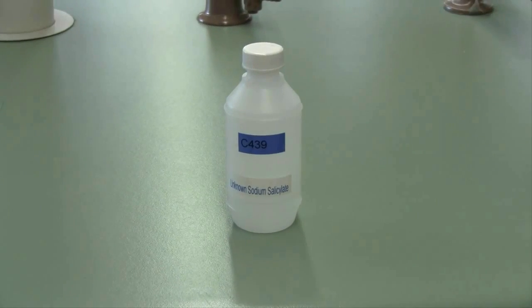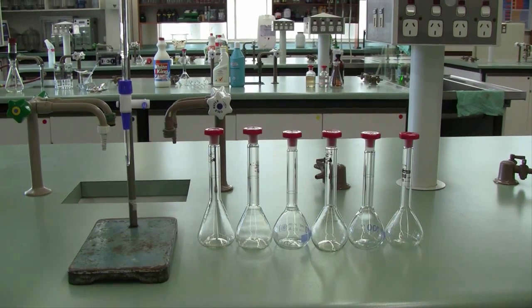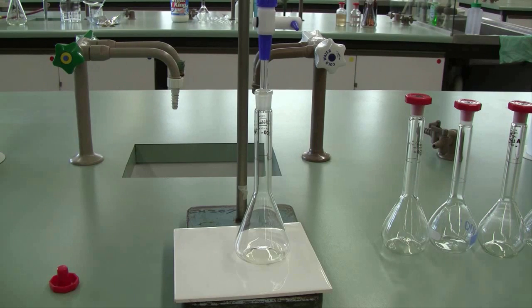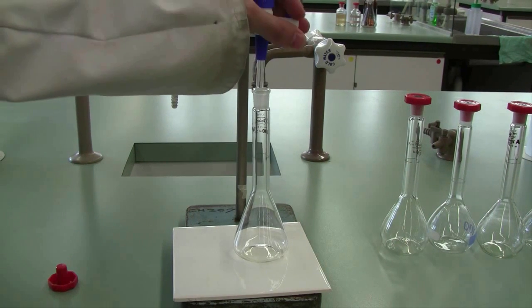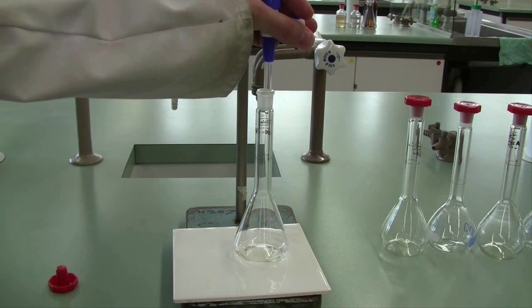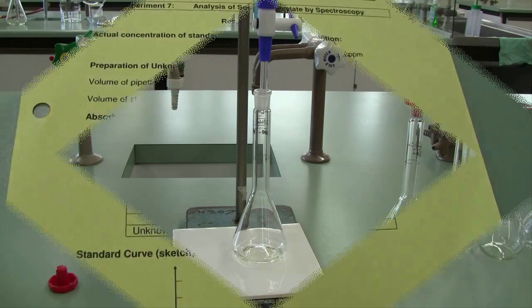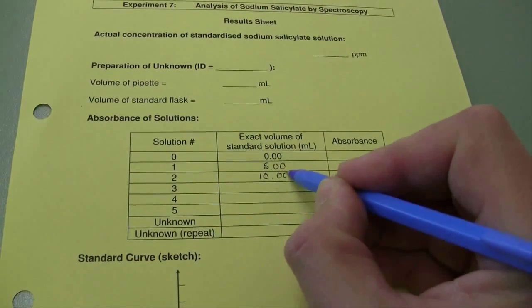You'll be issued with an unknown sample and an array of 100 mL standard flasks. Take the 150 parts per million standard sodium salicylate solution provided, fill your burette with it, and then use it to deliver an array of precisely known volumes into each standard flask according to the table in your notes. Record the exact volume you deliver on your results sheet.